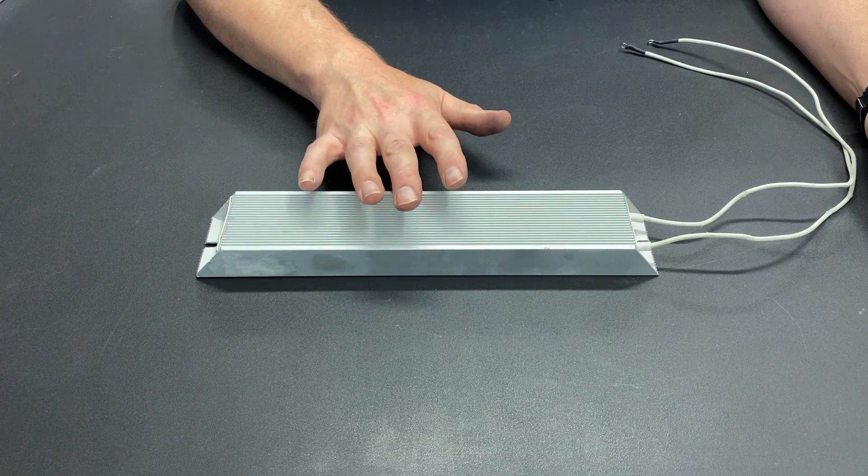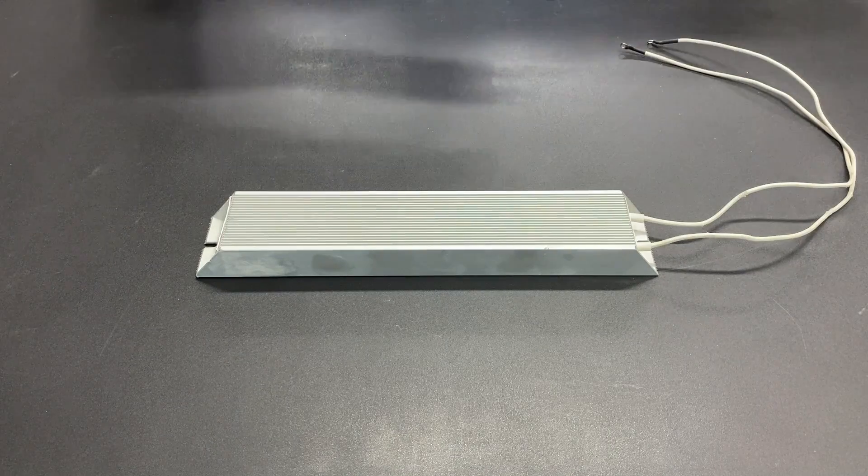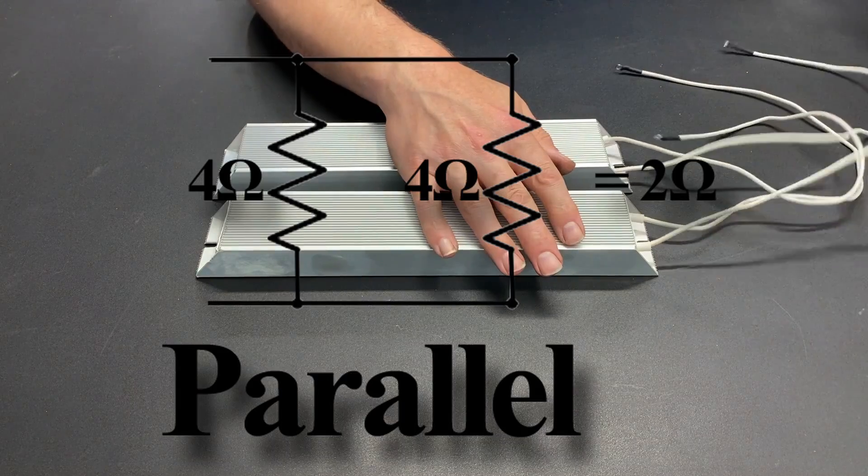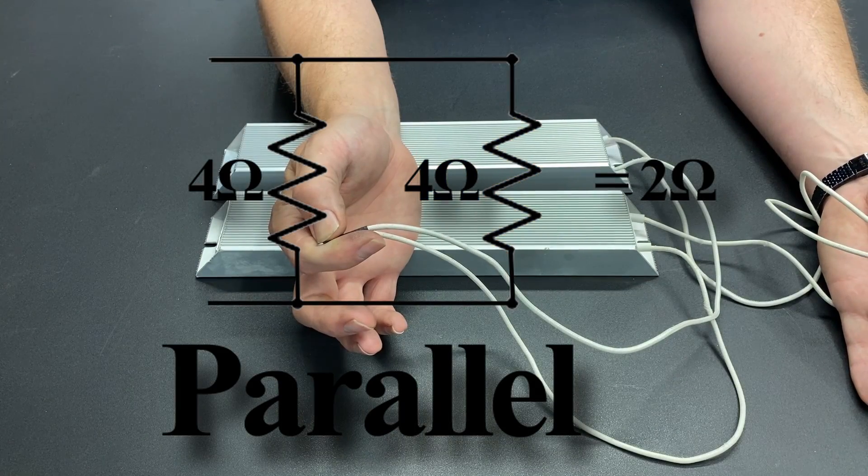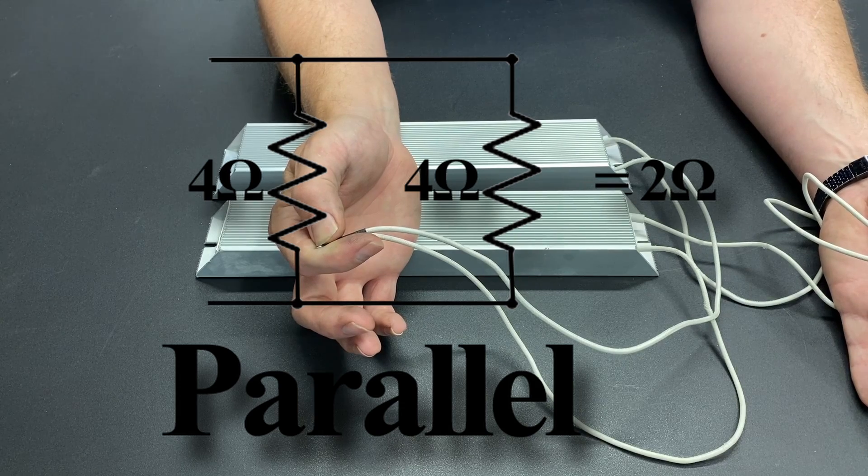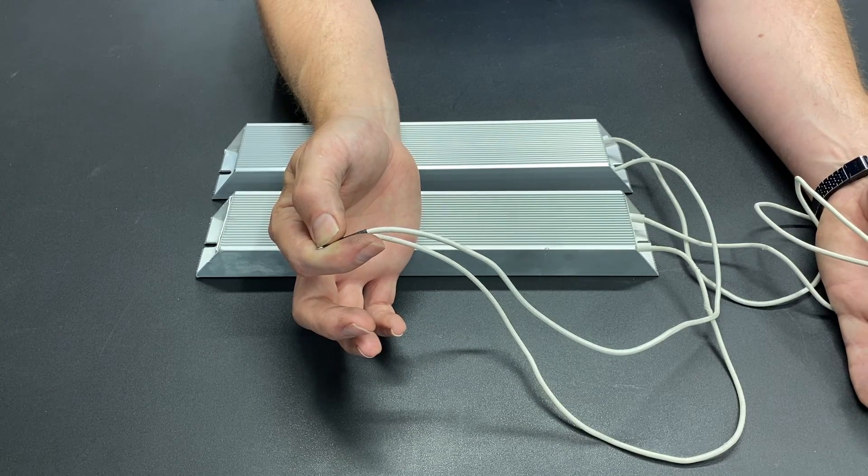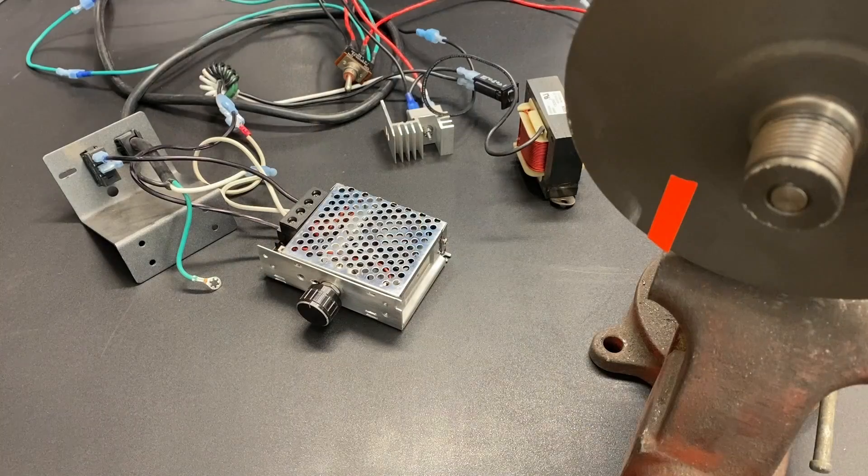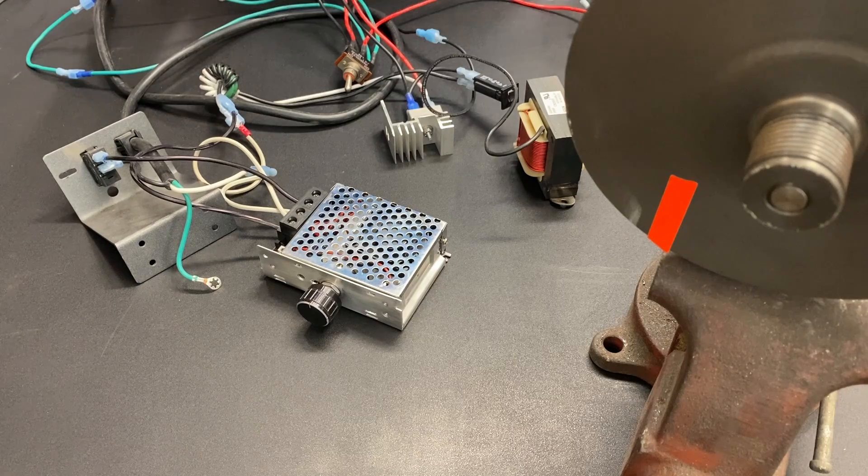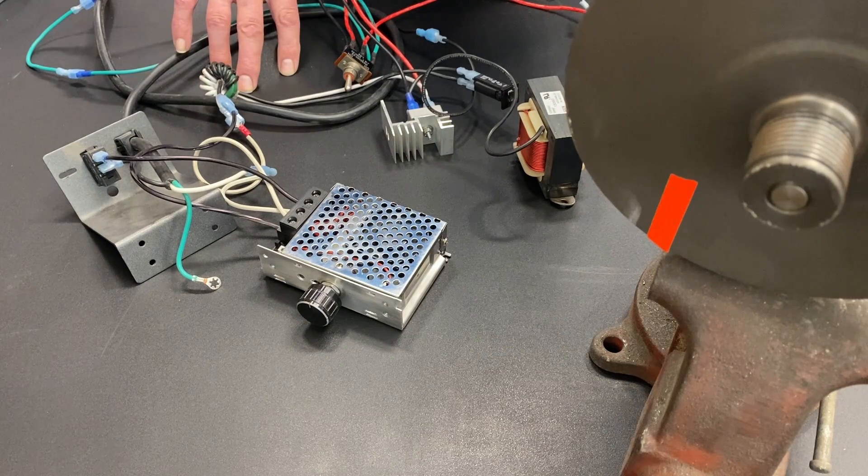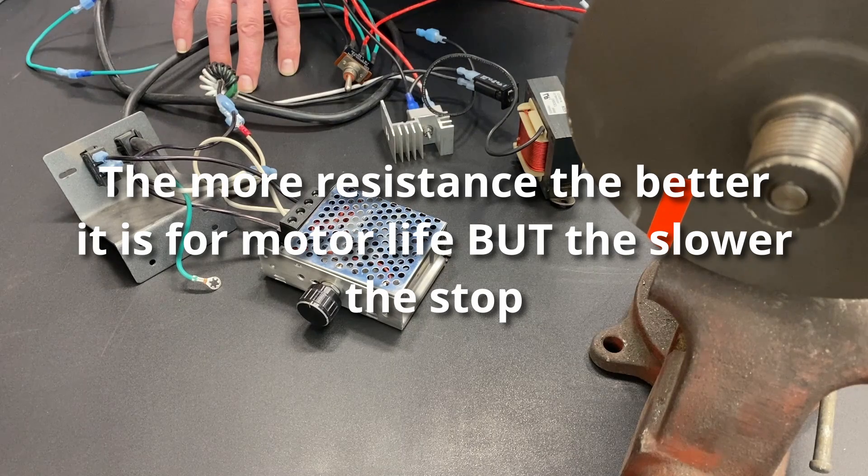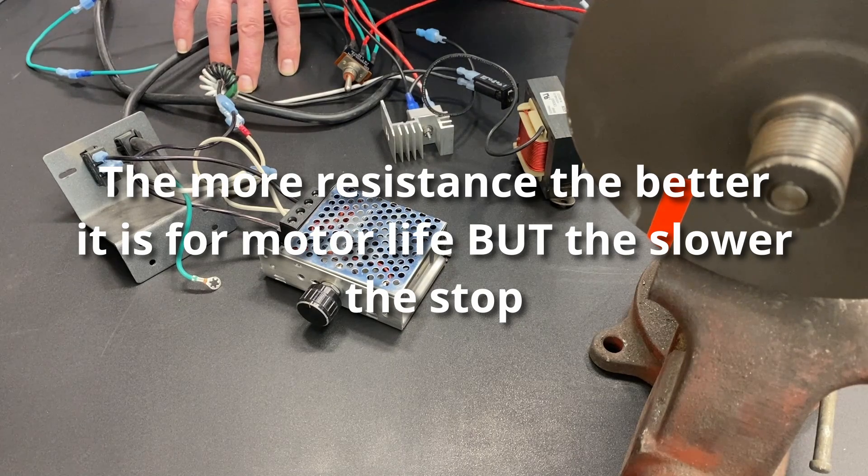Now if they are matched, if I take this four ohm resistor and this four ohm resistor and we wire them in parallel, now we get a resistance of two ohms, which is going to dissipate the energy from the free spinning motor quite a bit quicker. So here's the challenge. Here's the balance that we need to reach. You want the motor to stop as quickly as it can while having the minimum amount of wear and tear on the brushes inside.